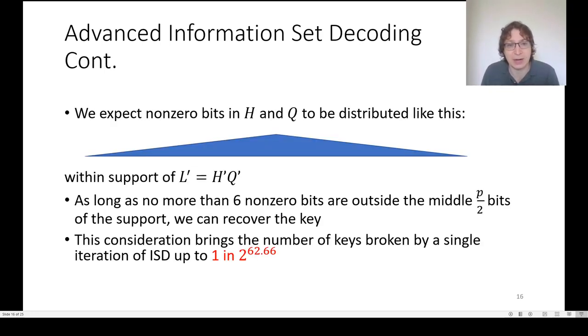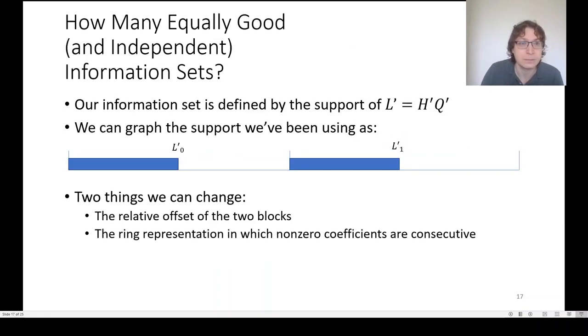This consideration brings the number of keys broken by a single iteration of information set decoding all the way up to 1 in 2 to the 62.66. That's one iteration. How many can we get by multiple iterations? Well, we have to choose a different information set that's equally good.